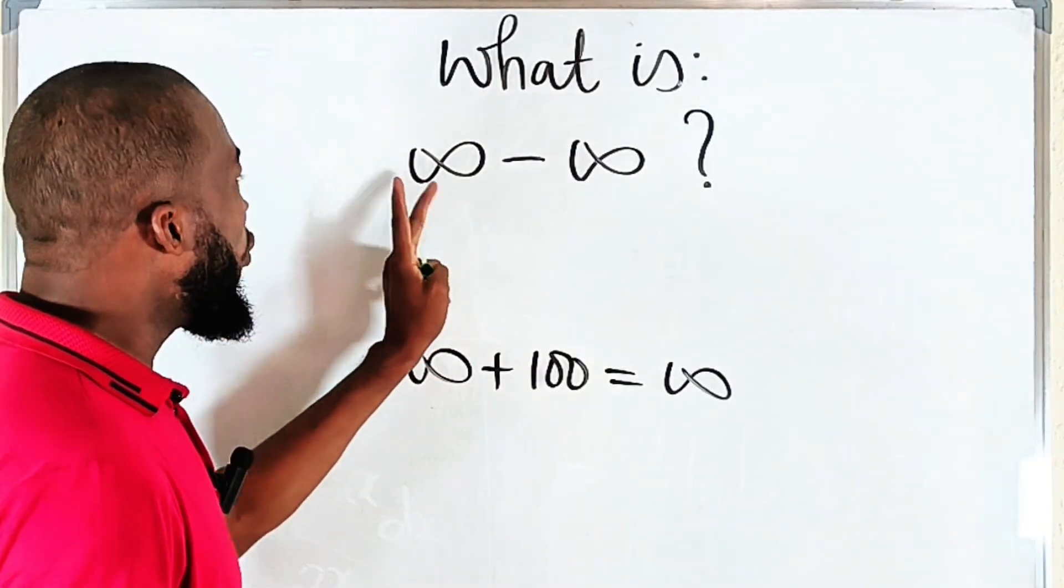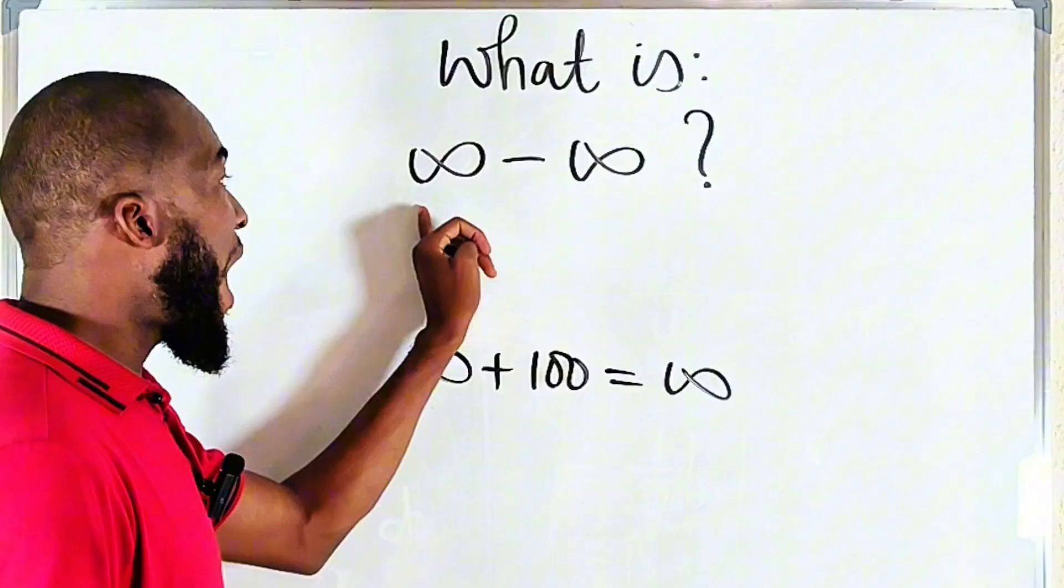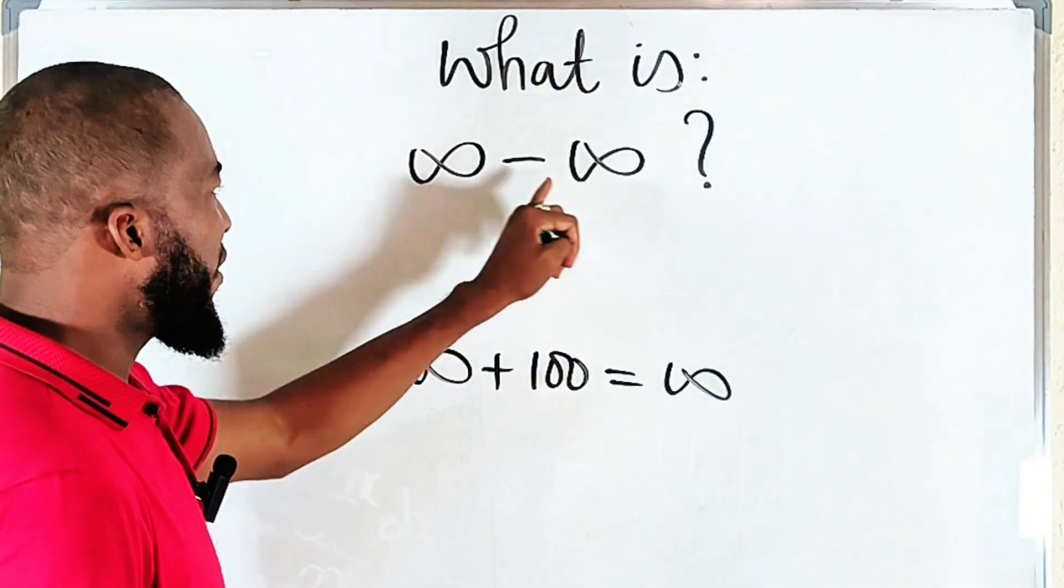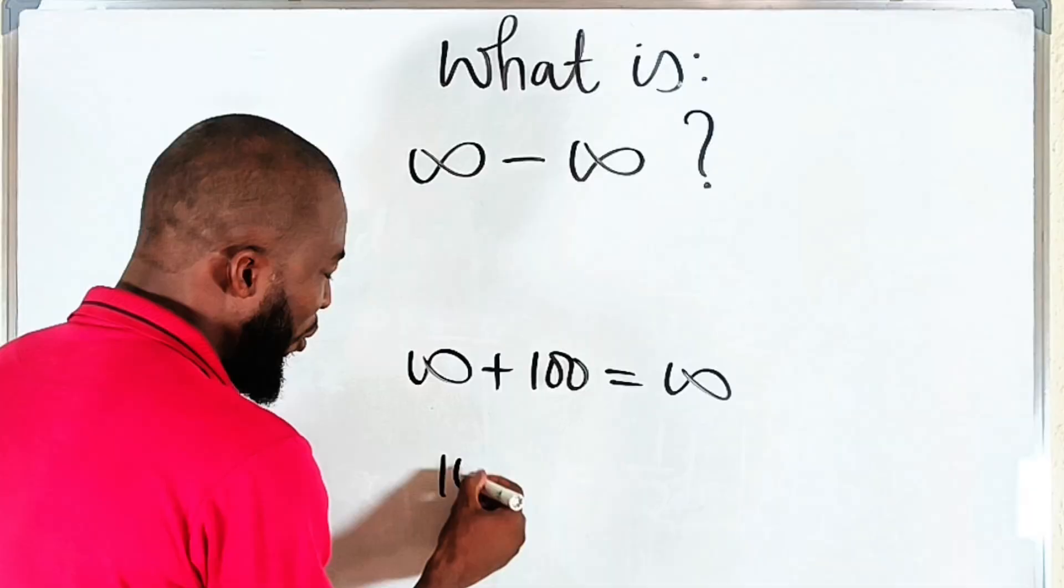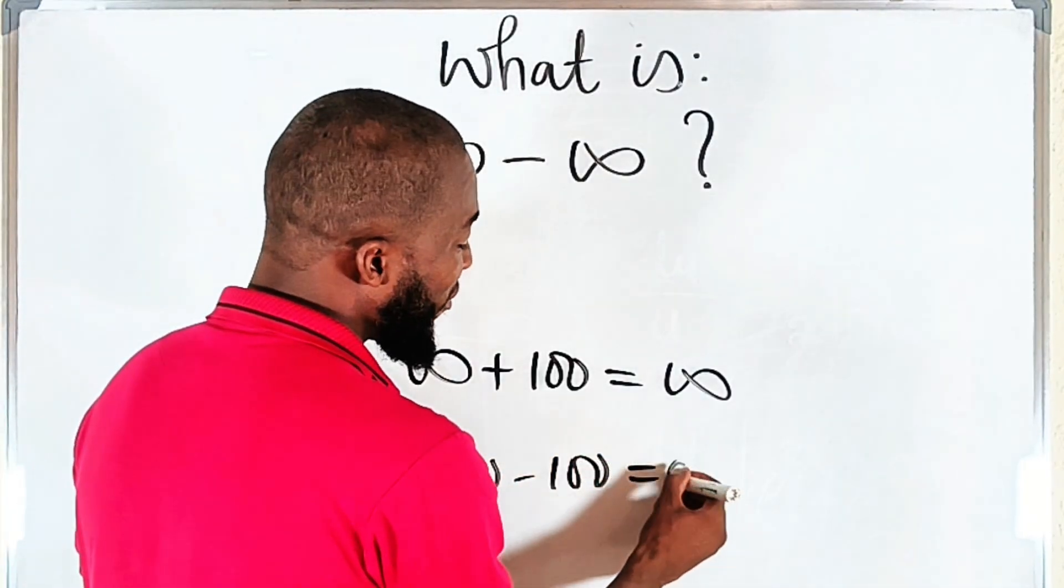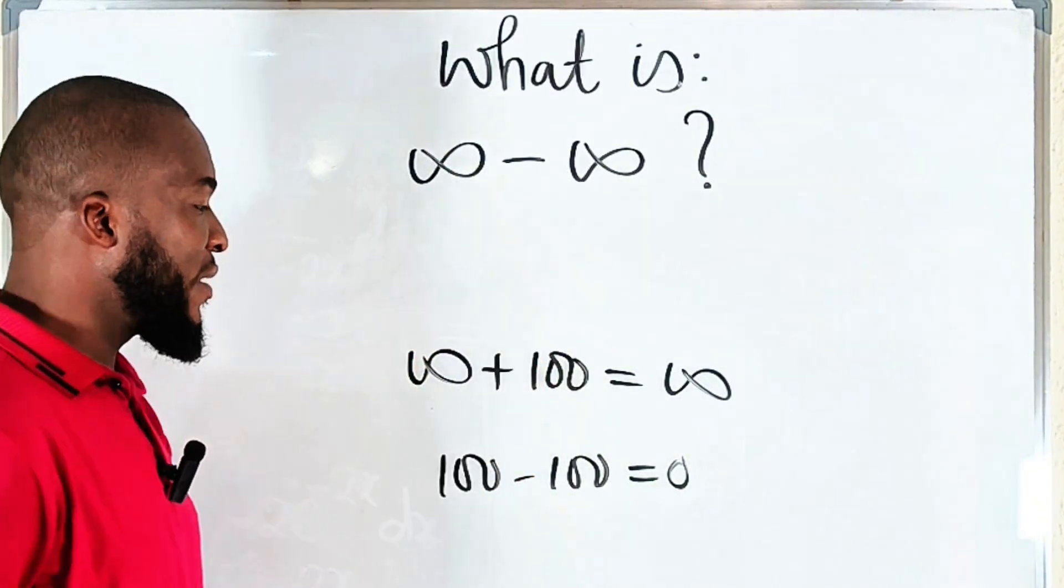Therefore, we don't know which is which. They are not necessarily the same. They are not necessarily the same like one thousand minus one hundred minus one hundred, which we know the two numbers are exactly the same. So this is zero. But these are not the same.